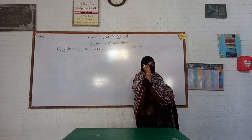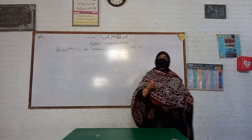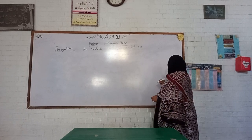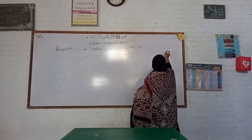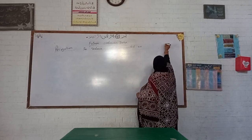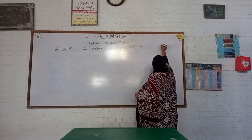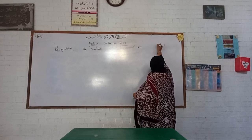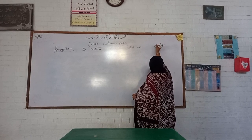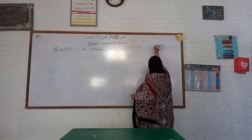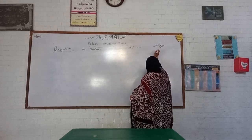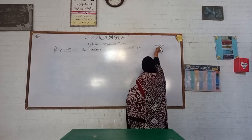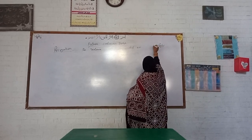The sentence will end on 'Raha Hoga', 'Rehi Hogi', or 'Rehe Hogi'. These are the ending words that identify the future continuous tense. Raha Hoga, Rehi Hogi, Rehe Hogi — these three forms are the key ending words to recognize.